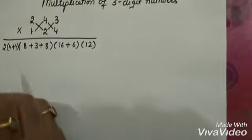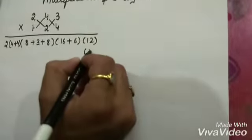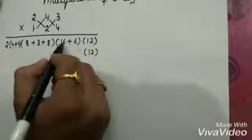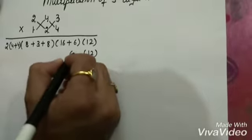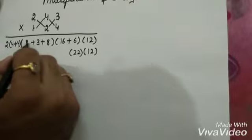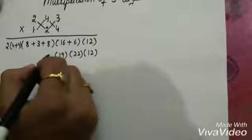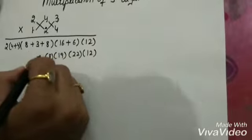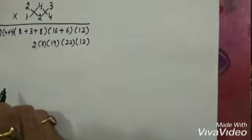This whole line we have got now. Next step, this 12 as it is, add these two, 16 plus 6, 22. 8 plus 8, 16. 16 plus 3, 19. 4 plus 4, 8 and then we have 2. We have written all the values together.